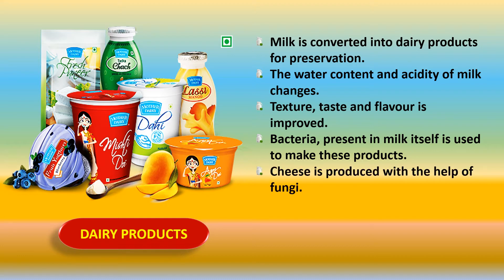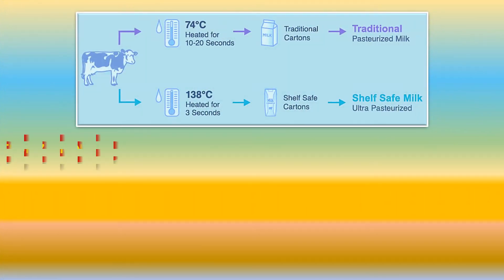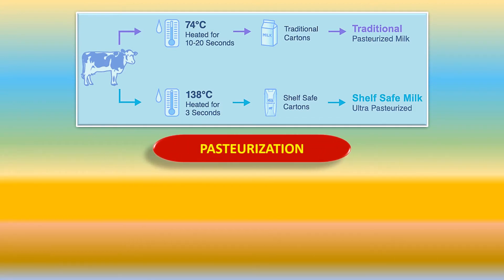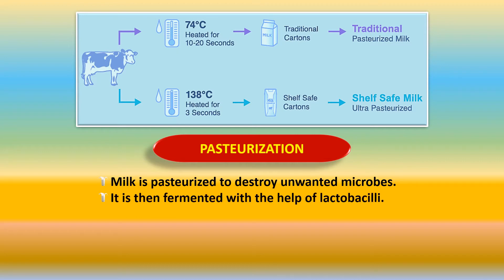Only cheese is produced with the help of fungi. The basic processes for the production of yogurt, cheese, and cream are almost the same. There is a process called pasteurization: if we want to increase the shelf life of milk products, then milk must be pasteurized — heated to a high temperature and then cooled — so that all unwanted microbes are destroyed. Then milk is fermented with the help of lactobacilli bacteria.